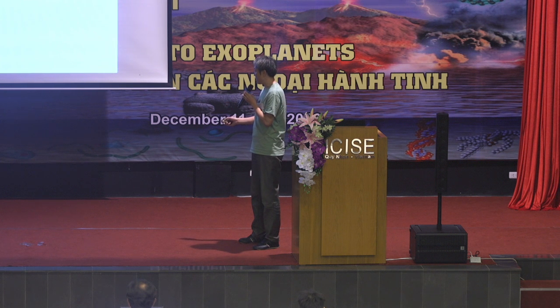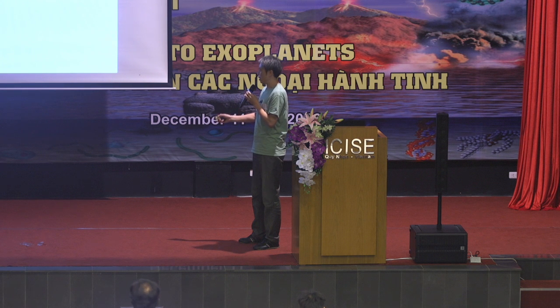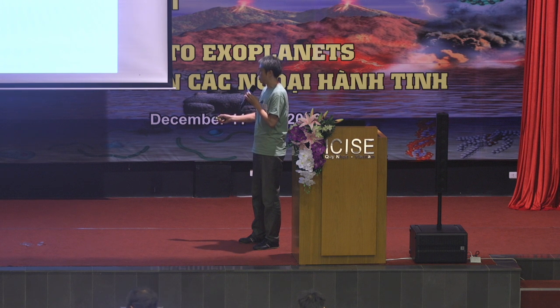This is the distance from the star, and the y-axis is dust surface density. So our interpretation is inside this bright region, the sintering proceeds and many tiny fragments are produced, and we can see it as a bright region.